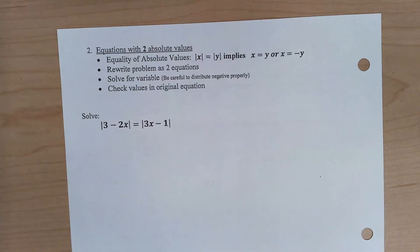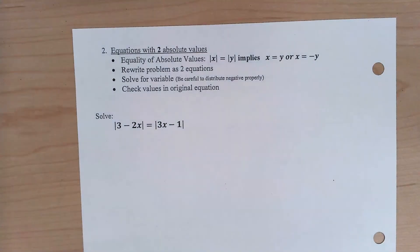All right, finishing up 9.3. We're looking at if we have an absolute value on both sides of the equation. So this isn't too crazy, too different from what we did with just a single absolute value.